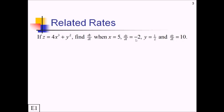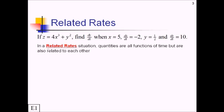That's a whole bunch of information. There's a couple things going on here. We have this equation that relates x, y, and z. We also have all of these d something over dt's. This kind of situation is a related rate situation. In a related rate situation, the quantities are all functions of that t there is time. But they're also related to each other.